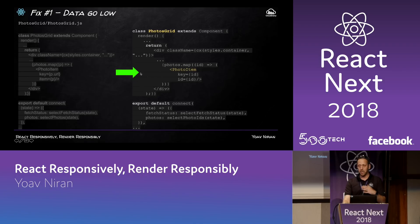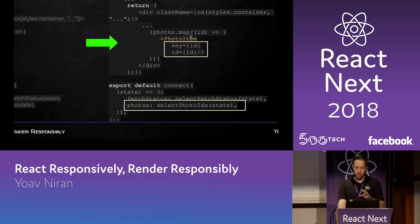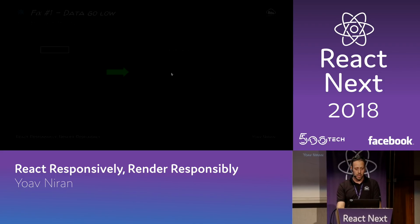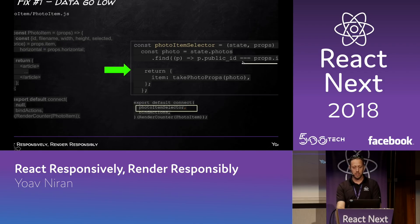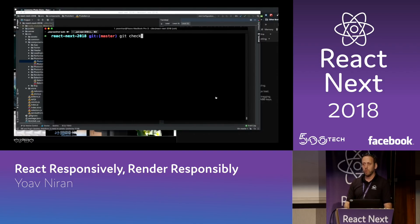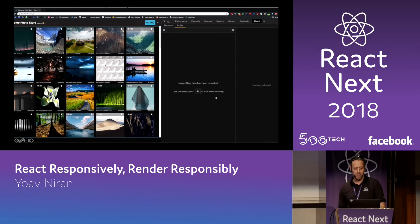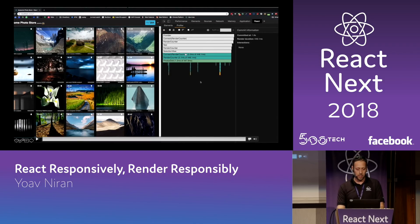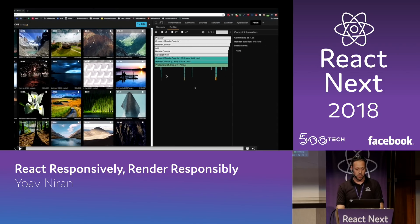We want to select data at the lowest point we can. So now I'm selecting the photo IDs only and passing the ID to the photo component. In my photo item component, I write a selector that uses the ID and grabs the item. When we implement this change in the app and use the React profiler — the new profiler in the React DevTools extension in Chrome — we can see that even though I moved my selectors, the photos grid still re-rendered and all the photo items still re-rendered. So we're still not there; there's more work to do.